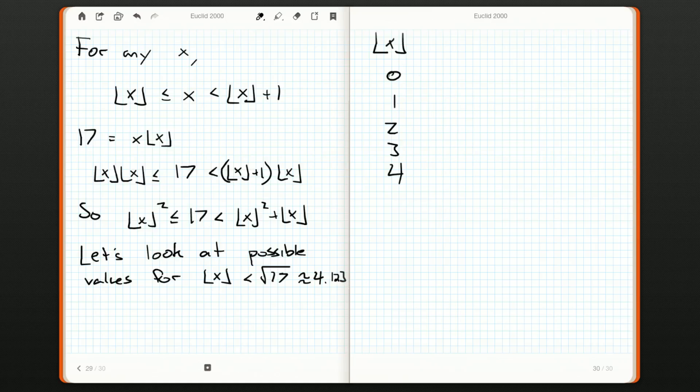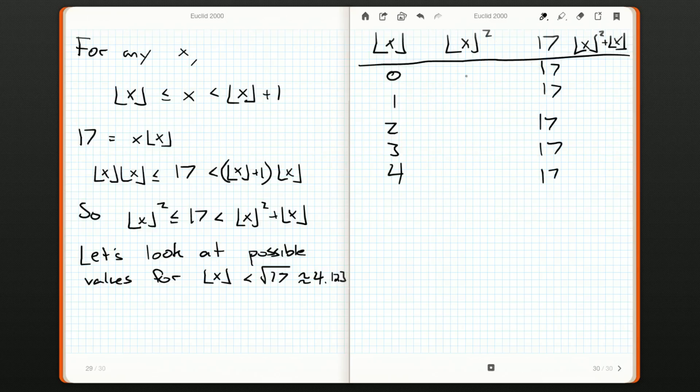So, x itself will start at 0 point something or 1 point something or 2 point something. 17, 17, 17, 17. And here we're going to have floor of x squared plus floor of x. So, we'll have 0, 1, 4, 9, 16. And over here we'll have, so 3 plus 9, that's 12, and 6, and 2, and 0. So, we can see the only situation that works is this last case right here.